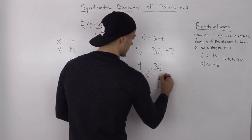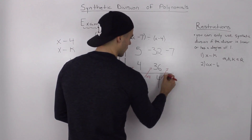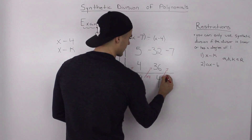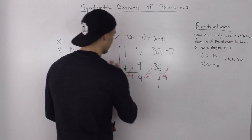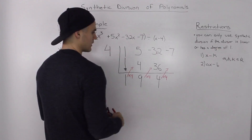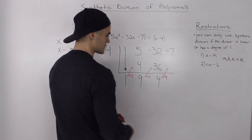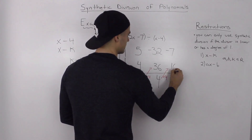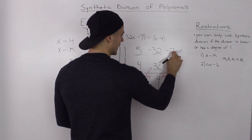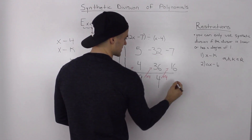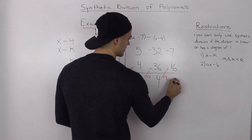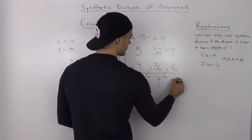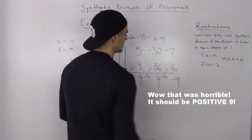Then same thing here — you take this 4, multiply it by the K value of 4: 4 times 4 is 16. And negative 7 plus 16 gives us negative 9.